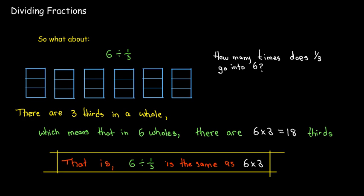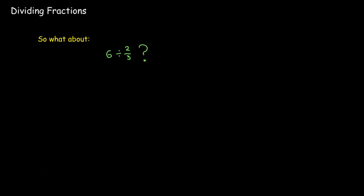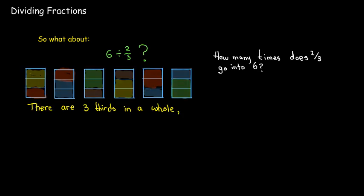What if I'm dividing by 2 thirds? Well, it's kind of the same idea. If you have 6 wholes, how many portions of 2 thirds can you get? So I went ahead, and here's my 6 wholes, and I went ahead and shaded groups of 2 thirds with different colors so that we could actually count them. Here's 1, 2, 3, 4, 5, 6, 7, 8, 9 groups of 2 thirds.